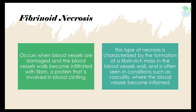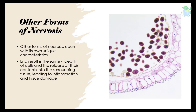Fibrinoid necrosis: a fourth type of necrosis is fibrinoid necrosis, which occurs when blood vessels are damaged and the blood vessel walls become infiltrated with fibrin, a protein involved in blood clotting. This type is characterized by the formation of a fibrin-rich mass in the blood vessel wall, and is often seen in conditions such as vasculitis, where the blood vessels become inflamed.